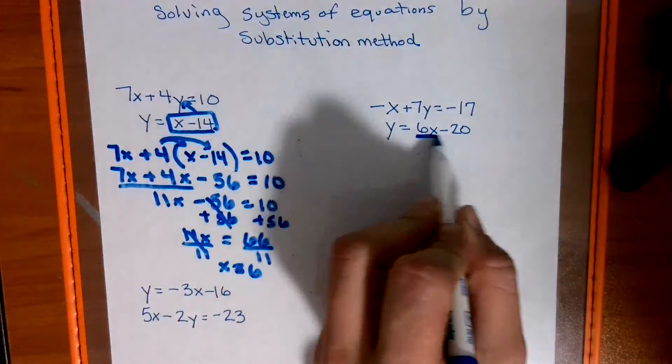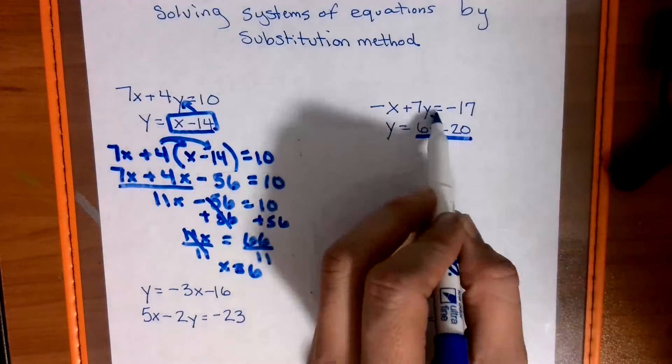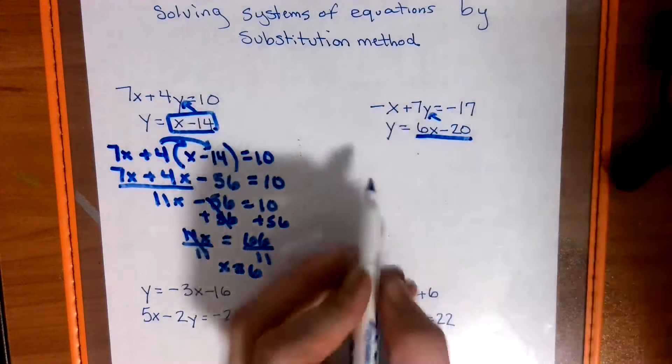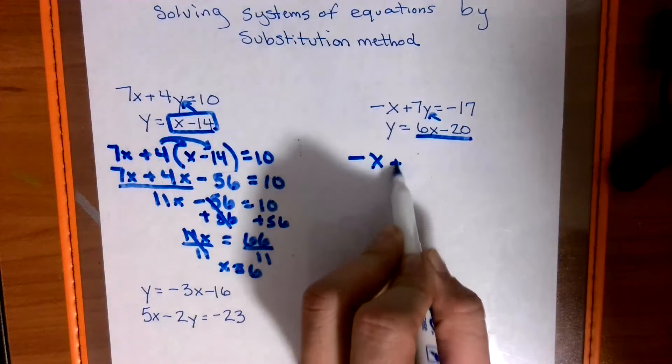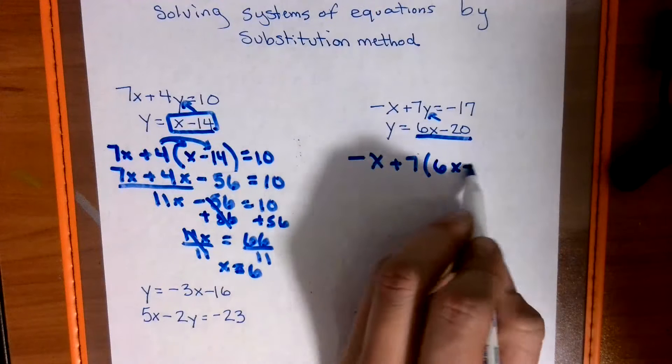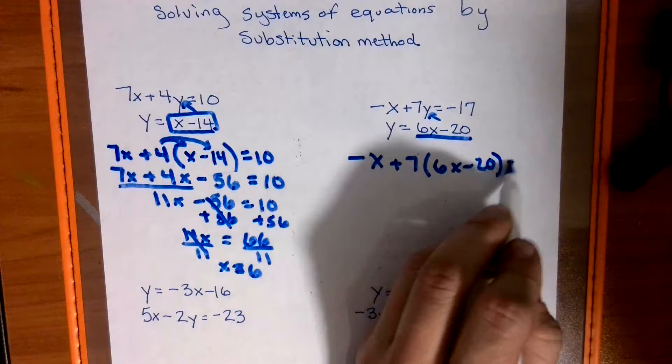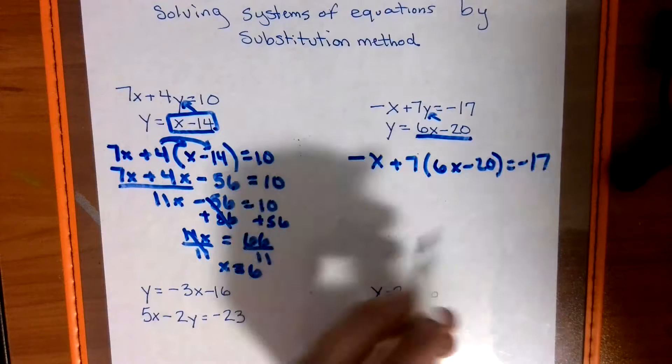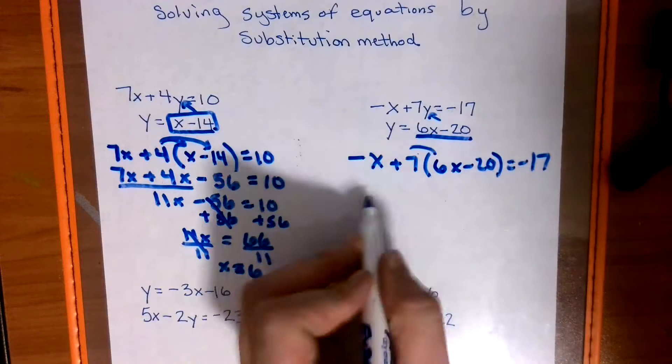So we're going to take this and insert it in for that y. So I have a negative x plus 7, 6x minus 20, equals negative 17. Distribute.